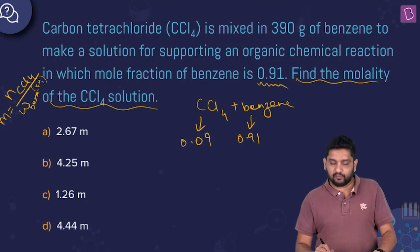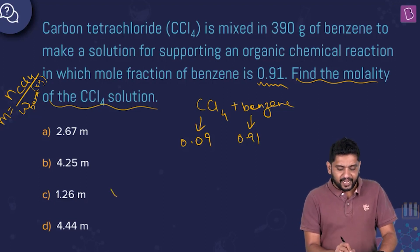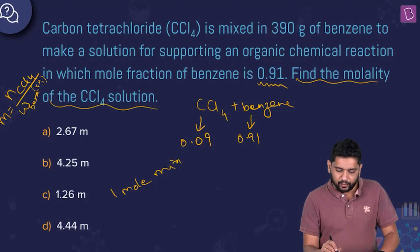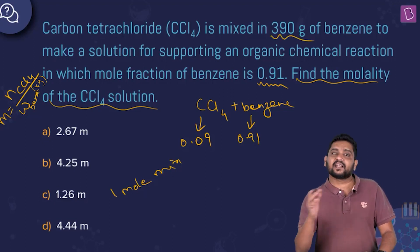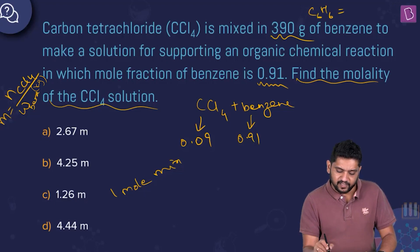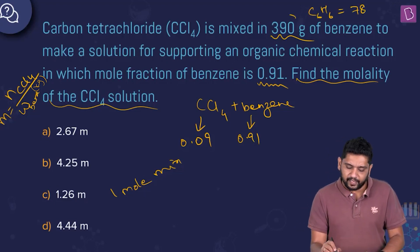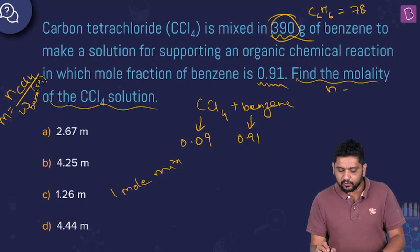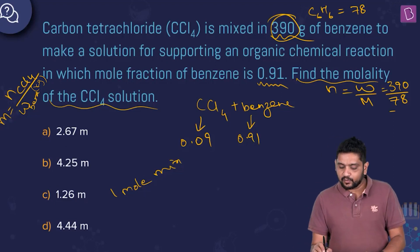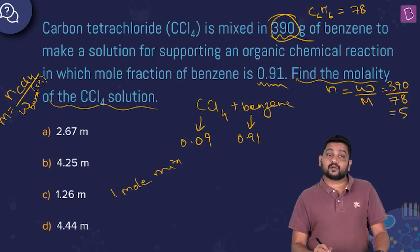When the mole fraction of benzene is 0.91, that means 0.09 is the mole fraction of CCl4. Now, 390 grams of benzene is given. Benzene is C6H6, so its molar mass is 72 + 6 = 78 grams per mole. Number of moles is weight divided by molar mass, so we get 390 divided by 78. Since 78 × 5 = 390, number of moles of benzene is 5.